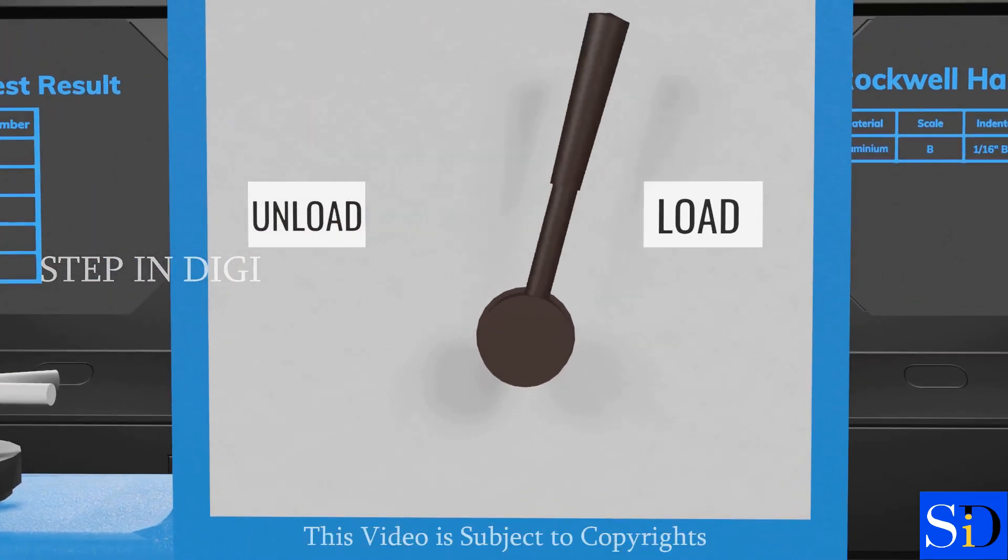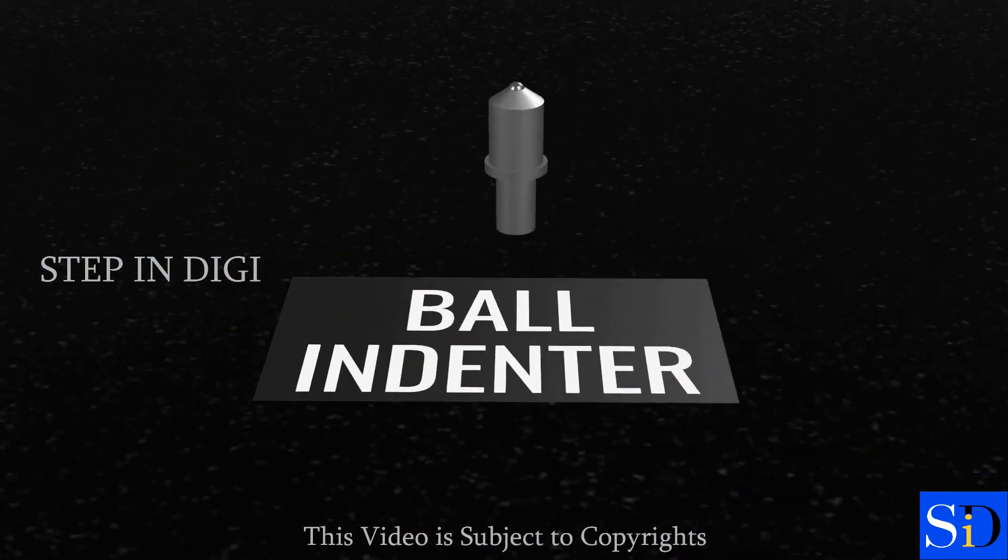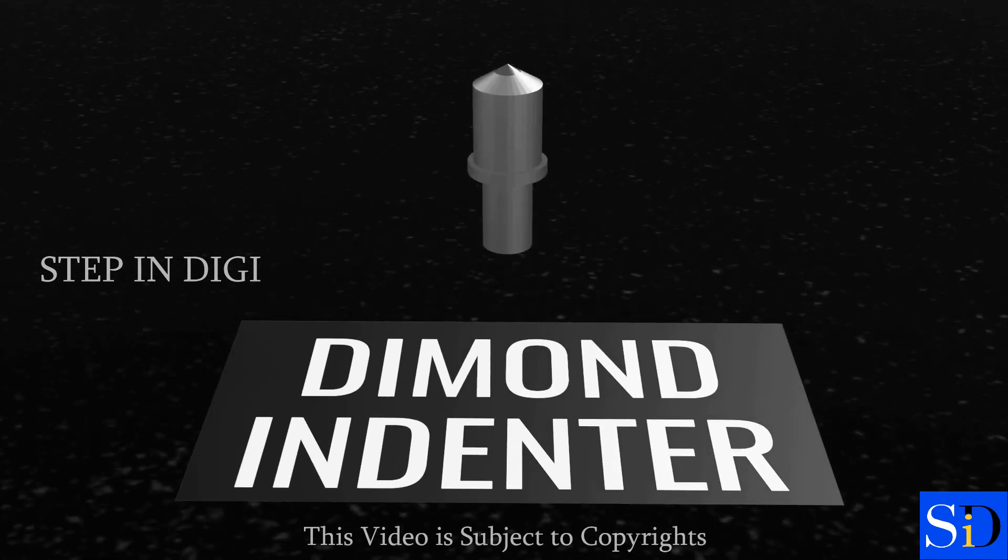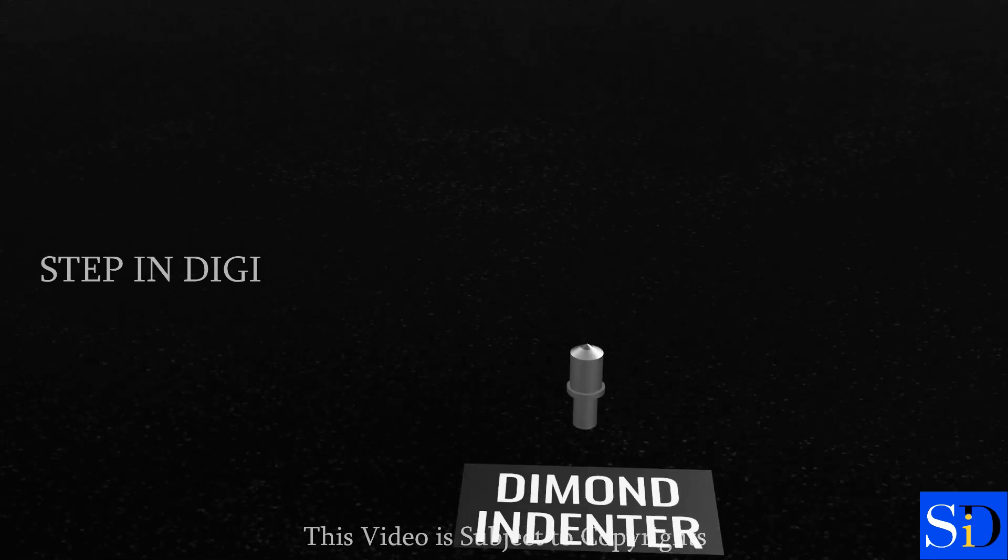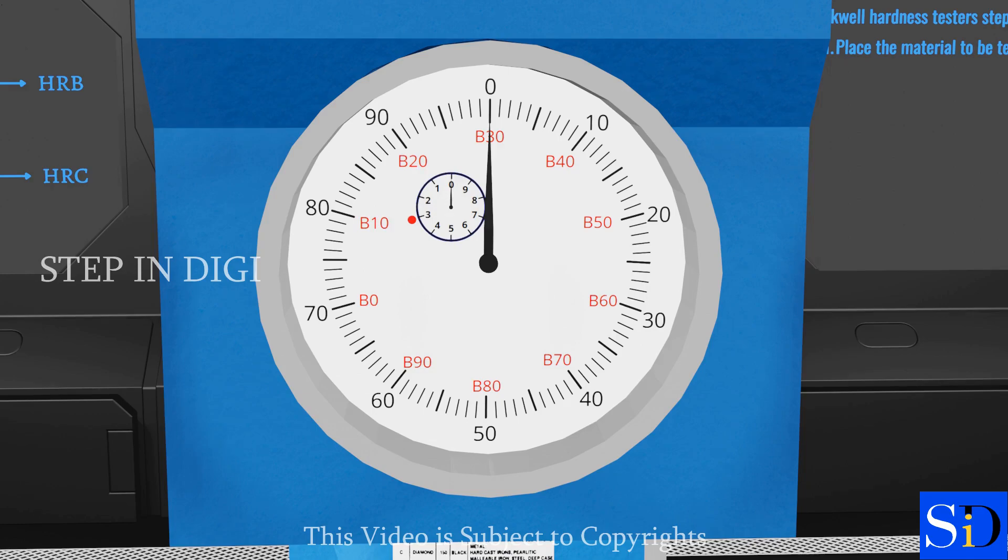5. A Rockwell ball indenter which is a hardened steel ball. 6. A Rockwell cone indenter which is a diamond cone of 120 degrees. 7. A dial that provides the reading of hardness number.